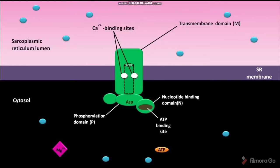The phosphorylation domain is also present in the cytosol. It has an aspartate amino acid, denoted as ASP. The fourth domain is called the actuator domain, denoted as capital A. It is also present in the cytosol and connects two of the membrane-spanning helices.